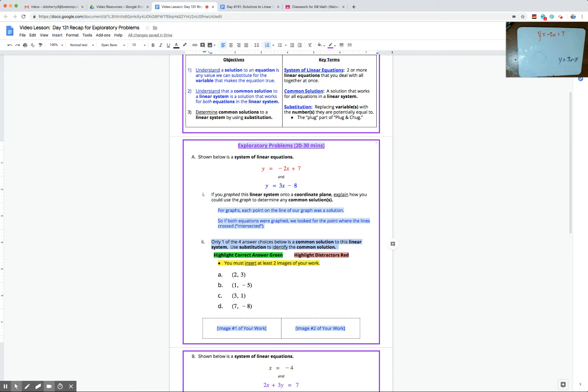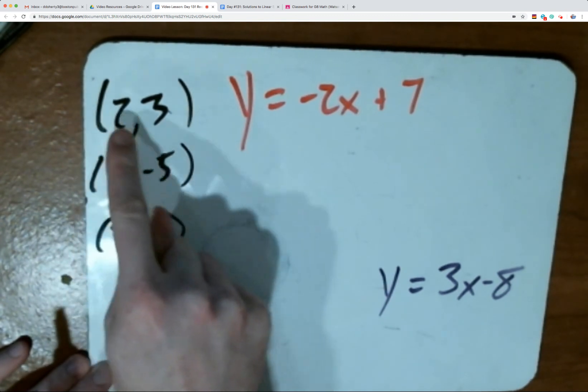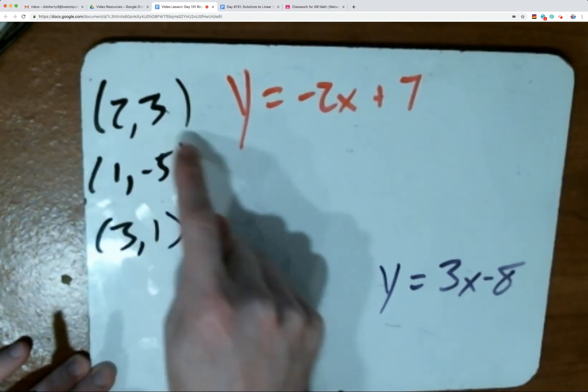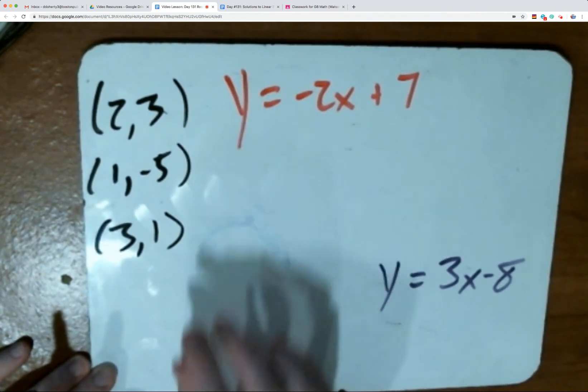I'm going to go ahead and focus on our first couple answer choices. A says 2 and 3, B says 1 and negative 5, and C says 3 and 1. So I'm going to write down each of those answer choices on my whiteboard. I'm going to go ahead and put the whiteboard full screen so we can see better now. First thing I'm going to do is check if this first answer choice, answer A, when x is 2 and y is 3. If that's going to be a common solution, it needs to work in both of these equations or make them true, balanced on both sides, while I plug it in.